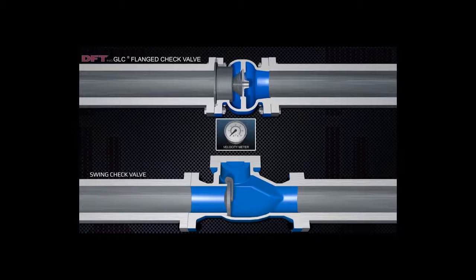Note, the spring closes the GLC, whereas the reverse flow closes the swing check.